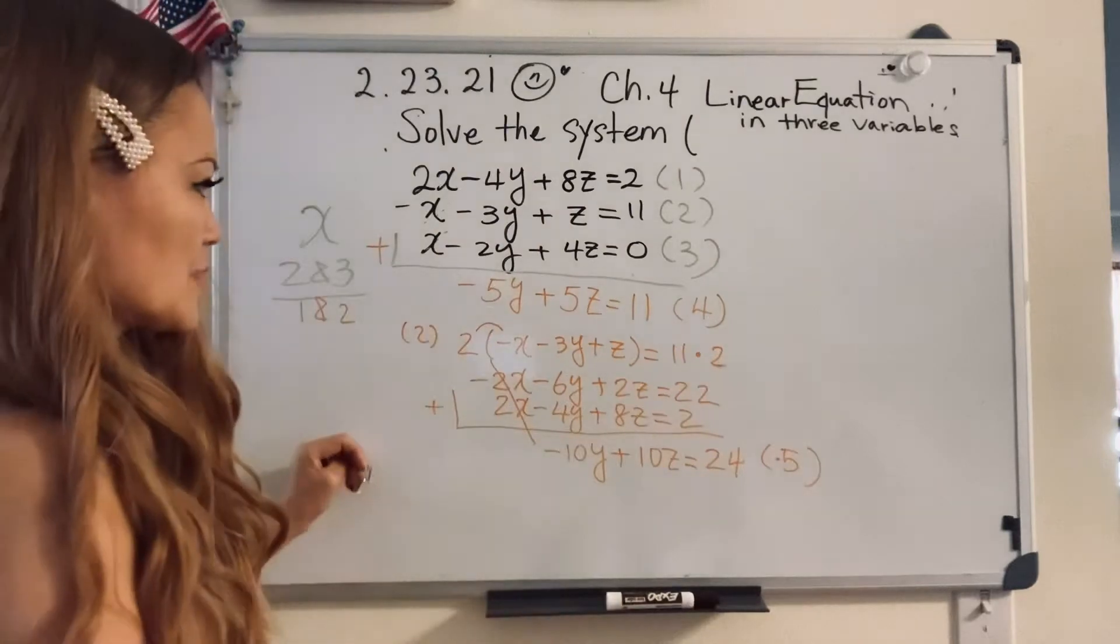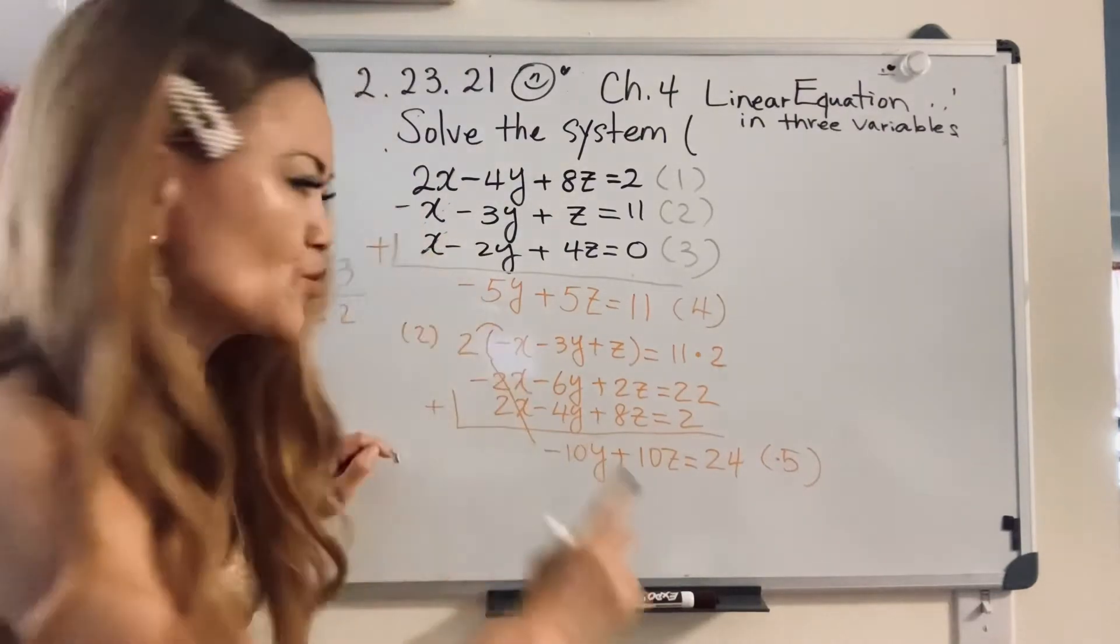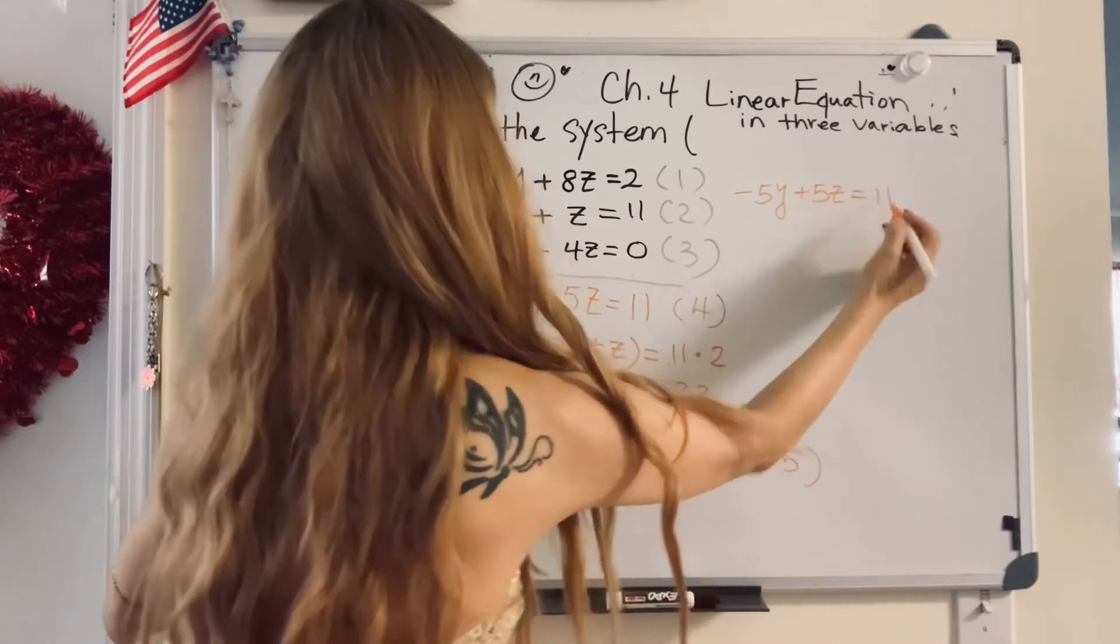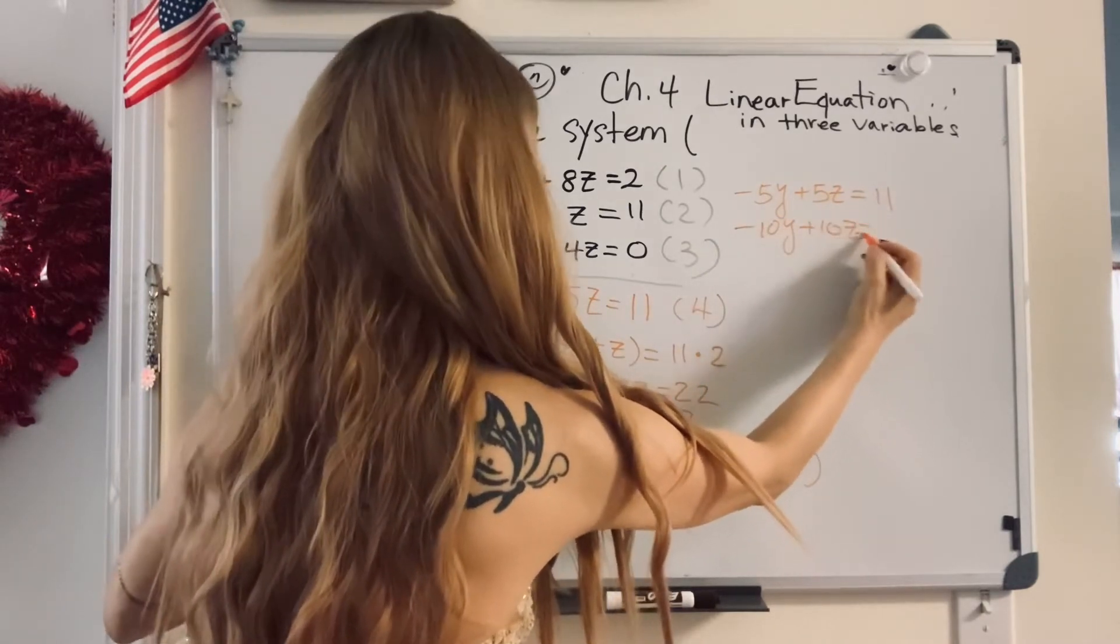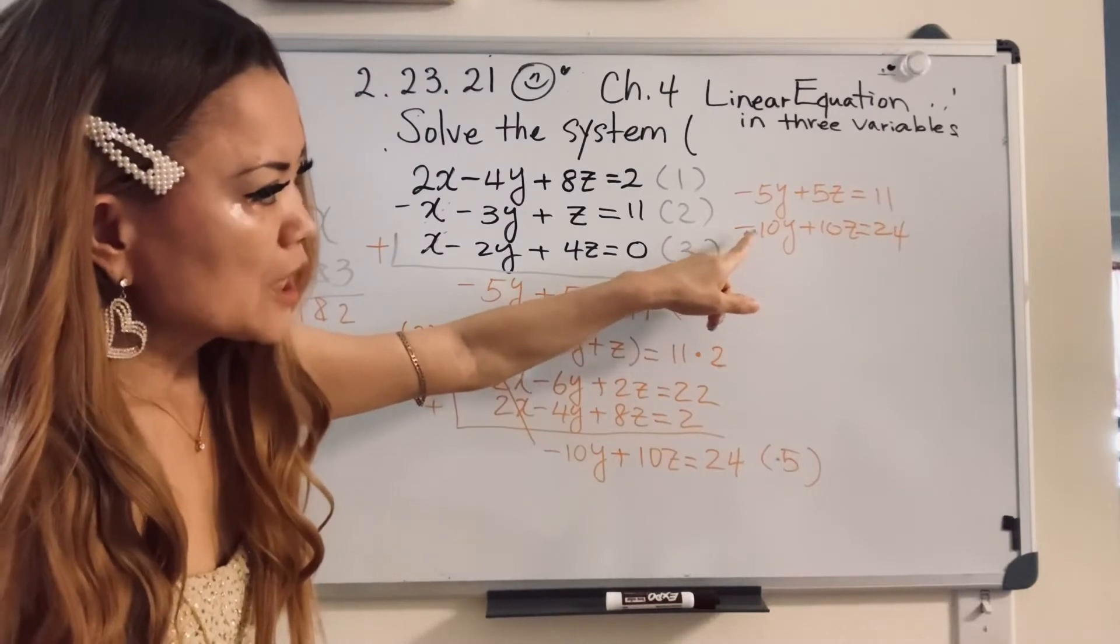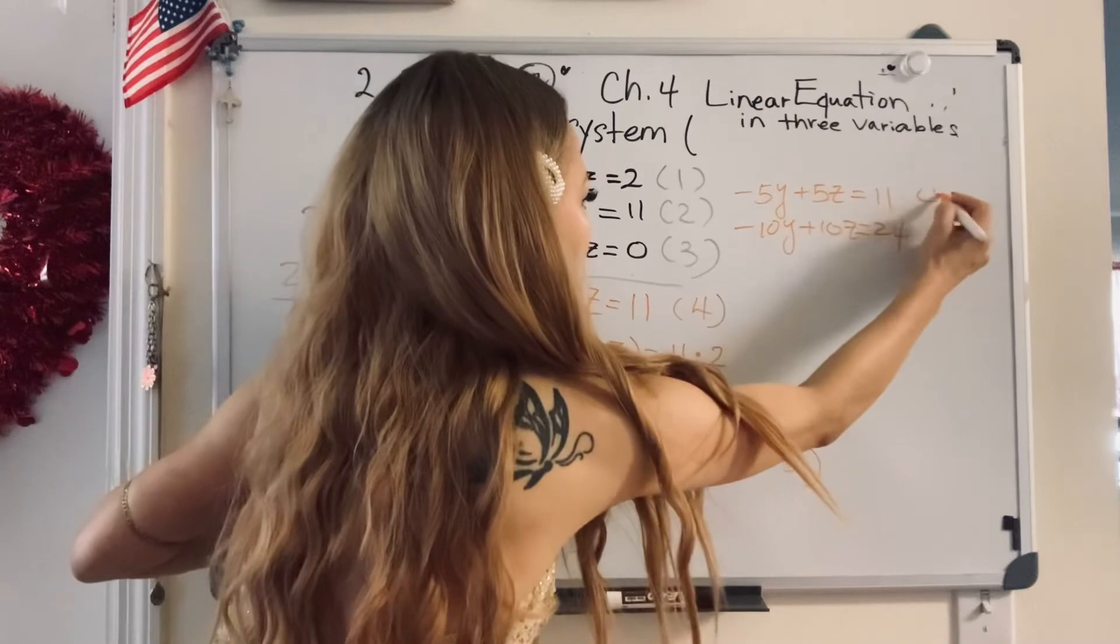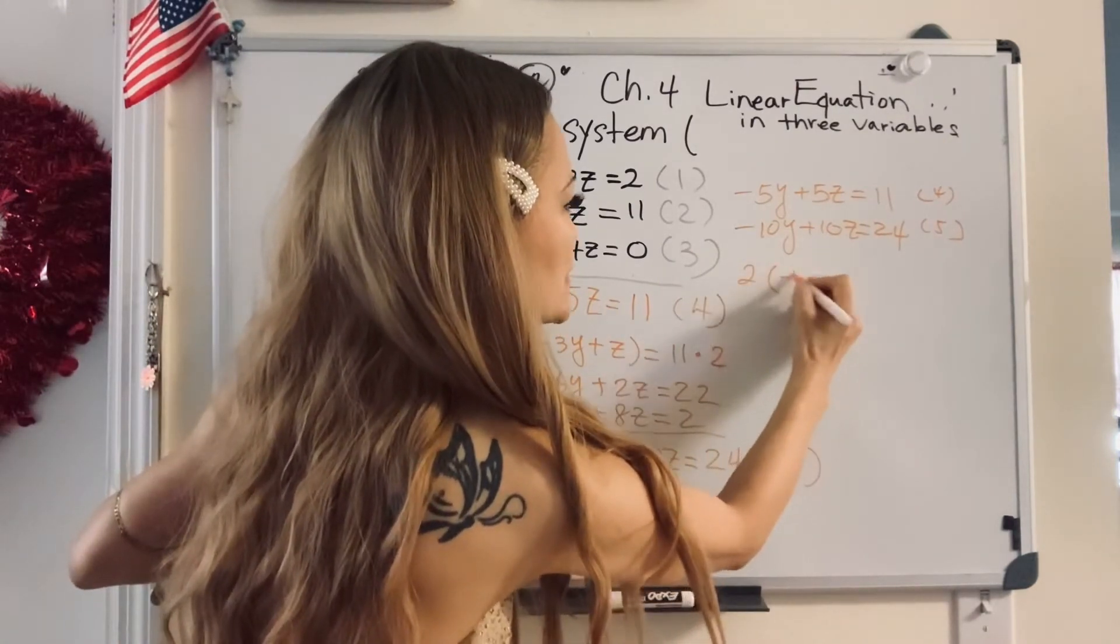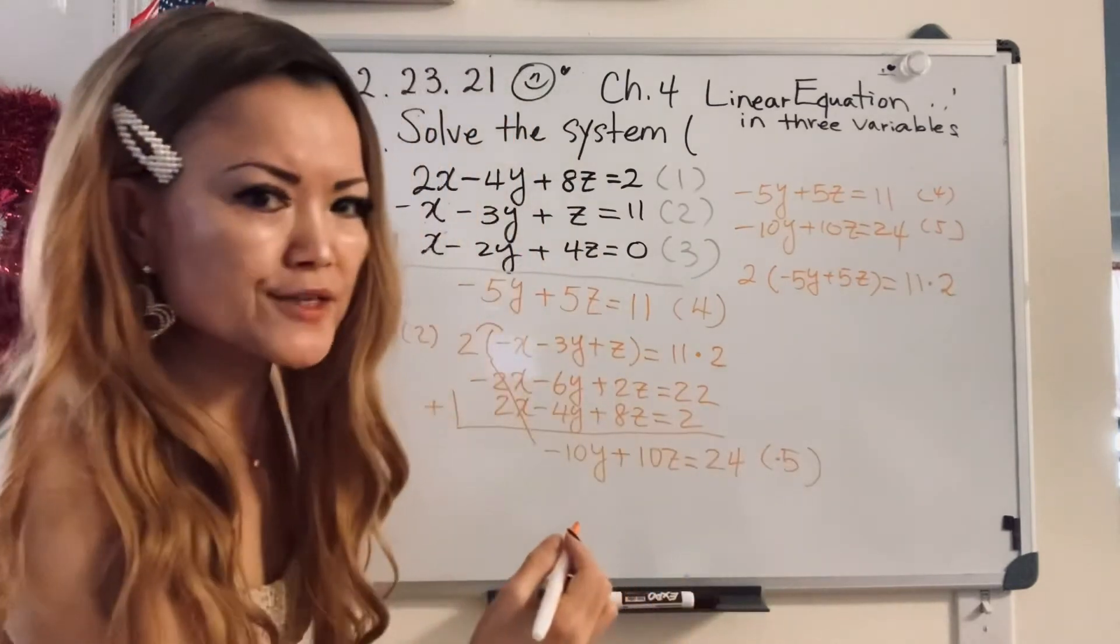So now, four and five, let's solve the problem with how many? Two equations, right? I'm going to rewrite. Number four is minus five y plus five z equal 11. And five is negative ten y plus ten z equal 24. So now, when you look at it, we can get rid of what? Y. So I'm going to multiply number four equation by two, multiply both sides by two. Two times negative five y plus five z equal, not only you, me too. Don't forget that, because equation, right?